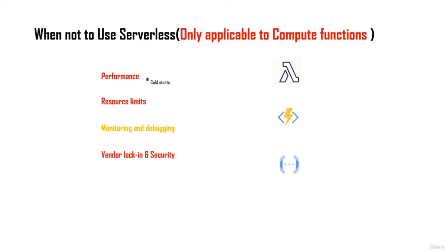Now let's look at some of the disadvantages of using serverless. These disadvantages are only applicable for the compute services currently available — this includes services like Lambda, App Functions, or Cloud Functions in GCP. The most important disadvantage is performance. Then there are resource limits, monitoring and debugging, and vendor lock-in and security. Monitoring and debugging tools are currently quite rudimentary in some of these services, but they will gradually get better.